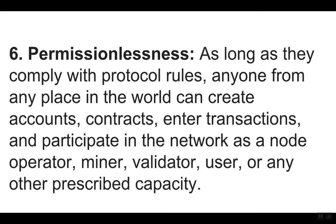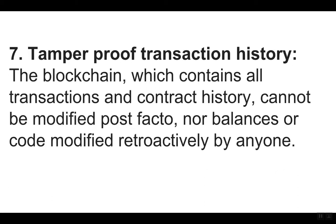Six: permissionlessness — as long as they comply with protocol rules, anyone from any place in the world can create accounts, contracts, enter transactions, and participate in the network as a node operator, miner, validator, user, or any other prescribed capacity. Seven: tamper-proof transaction history — the blockchain, which contains all transactions and contract history, cannot be modified post facto, nor can balances or code be modified retroactively by anyone.